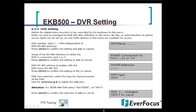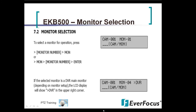If you have the DVR locked away somewhere, you can have the EKB500 sitting in front of you and it will control your PTZs and the menu of your DVR, so you do not have to be in front of the DVR at all times. You can control both the DVR and the PTZ camera all from this keyboard.